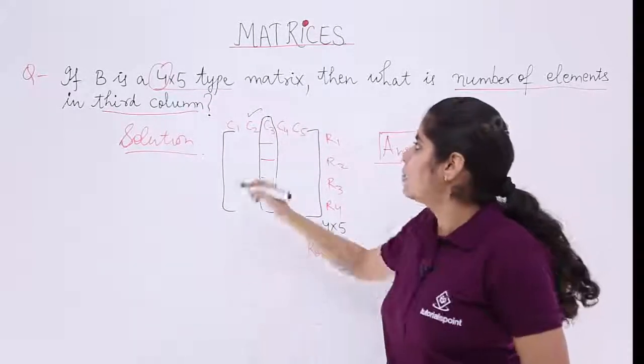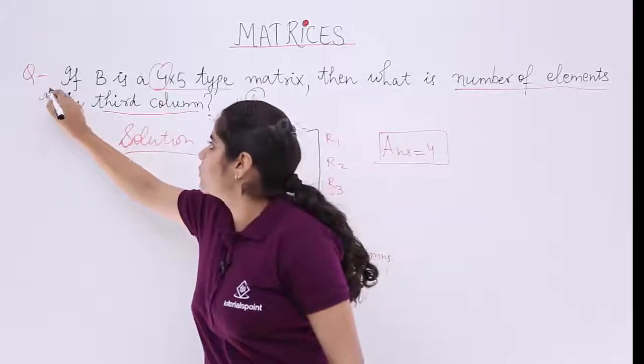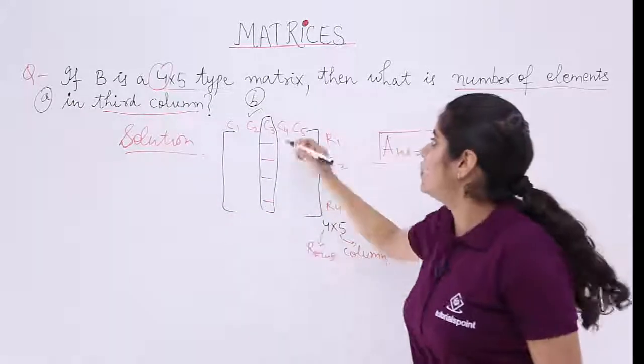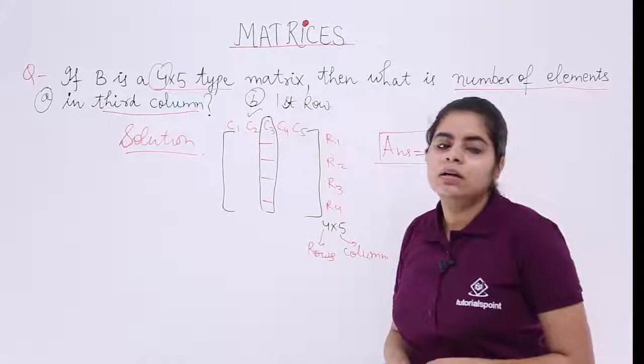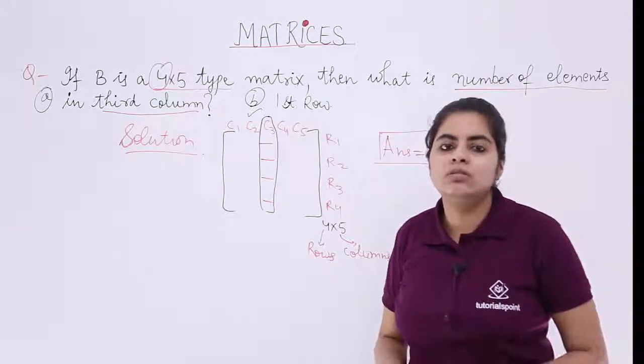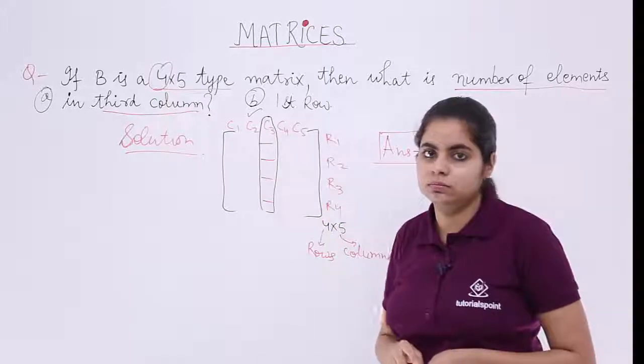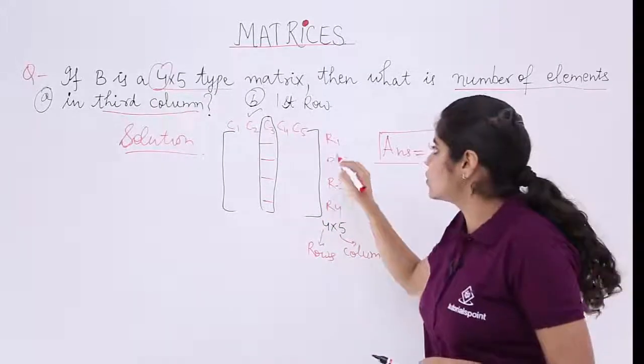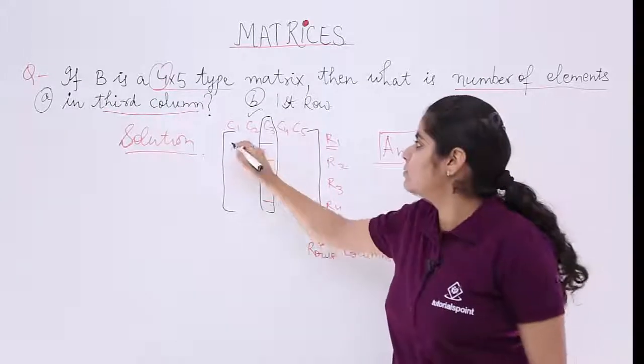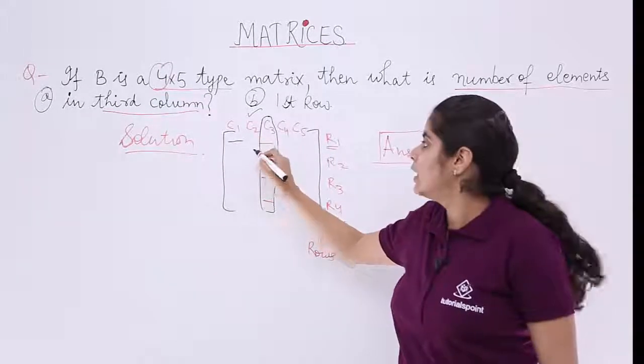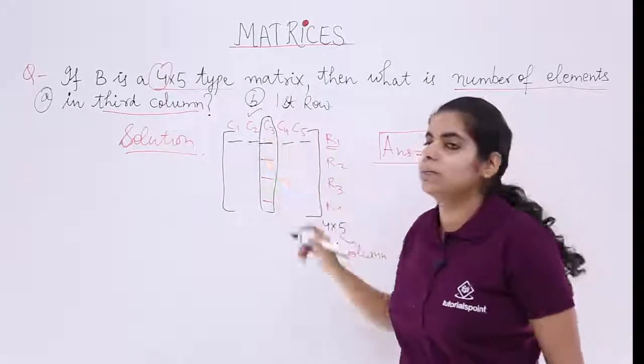Say now I put this is the first part and I put a part B to this question. This is A part, this is B part. First row. Now the examiner or the question asks me to find out the number of elements in the first row. Now look at the row. Where is first row? It is here. First row number of elements. One element here. The other element here. The third element. The fourth element. The fifth element.